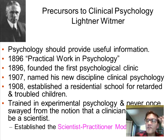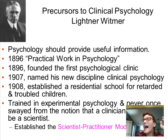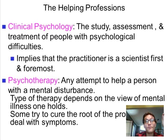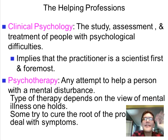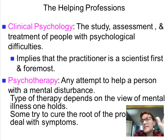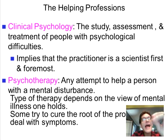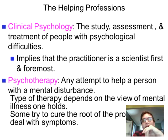The scientist-practitioner model holds that clinically or counseling-related psychology requires a practitioner to be a scientist first, then a practitioner. The science must come before the application — and that should apply in any discipline, whether IO psych or otherwise. The scientist comes first, applications second.